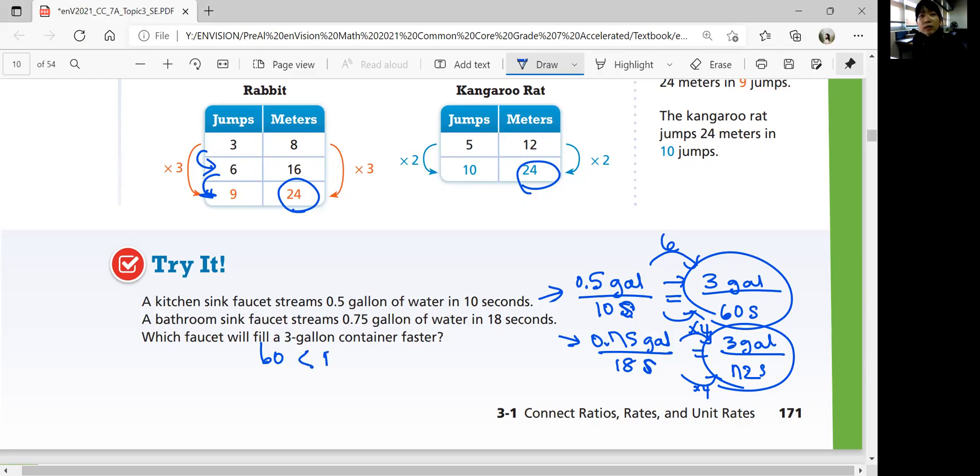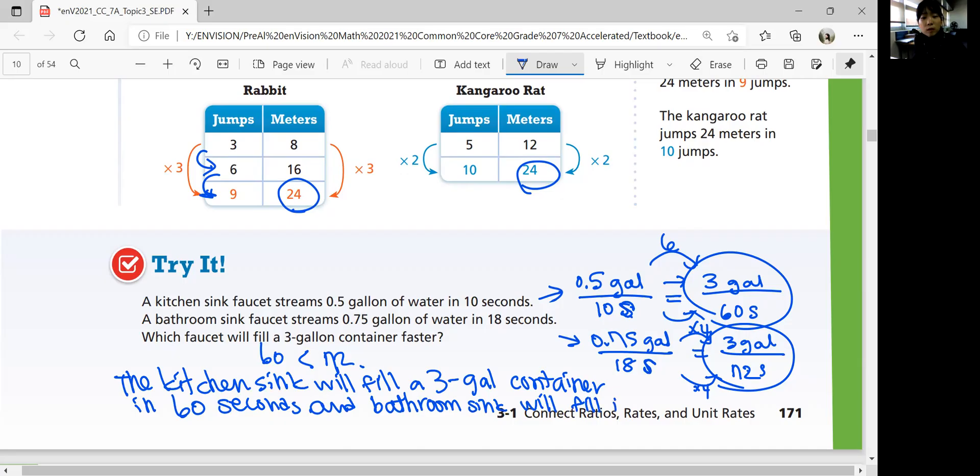Which one is faster? The kitchen sink. You can say the kitchen sink will fill a three-gallon container in 60 seconds, and the bathroom sink will fill a three-gallon container in 72 seconds. So the kitchen sink is faster.